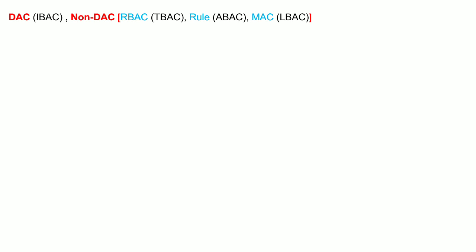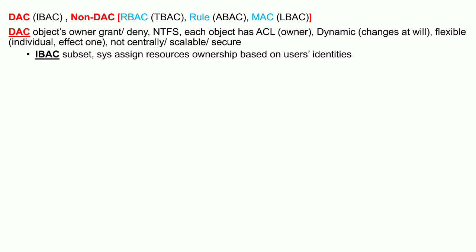In discretionary access control models there is a sub-category called identity-based access control models. In non-discretionary access control models there are various categories: role-based, task-based, rule-based, attribute-based, mandatory, and lattice-based access control models.